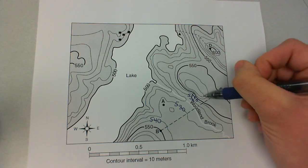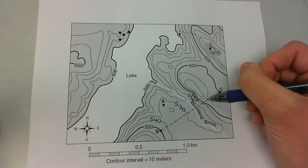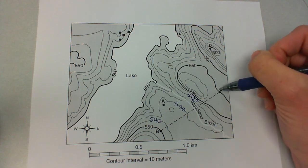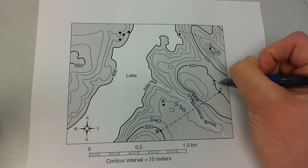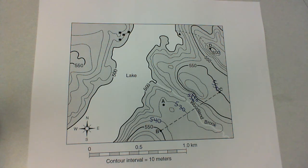We don't have to label these because we're not going to be plotting them. They're not going to be on our profile. So we can skip over them. And then C is 550. If you want to label it right next to letter C, that's fine so that you have that labeled.